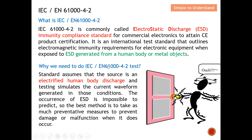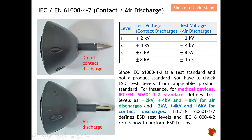There are two forms of ESD testing. The first is direct contact discharge, which uses a pointed tip on the gun head. The second is air discharge, which uses a rounded head. To identify whether it is for direct contact or air discharge: a sharp edge tip indicates contact discharge, while a rounded head indicates air discharge. Looking at the test level table, we have levels one through four, each with corresponding test voltages for both contact discharge and air discharge.